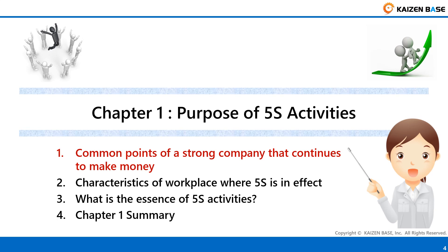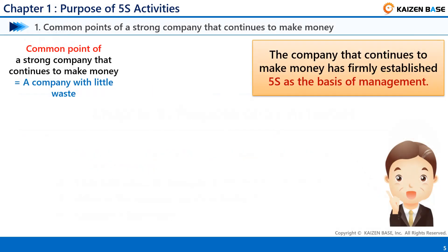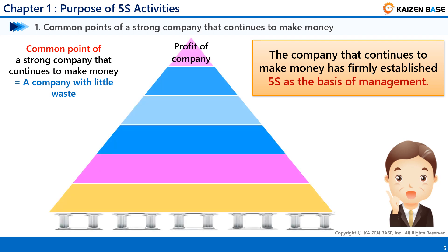First of all, it is about common points of a strong company that continues to make money. A strong company that continues to make money, and a company with little waste, have something in common. That is, 5S is firmly established as the basis of management. Let's look at the pyramid.